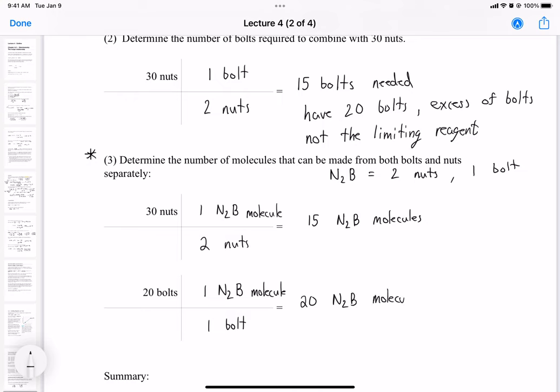But that's assuming we have an excess of nuts. So we see here that the nuts produce less product, right? So here we have less product, less N2B molecules. So this is the limiting reagent.